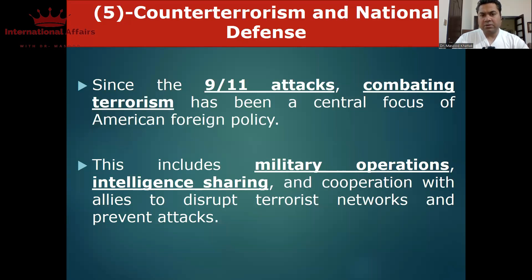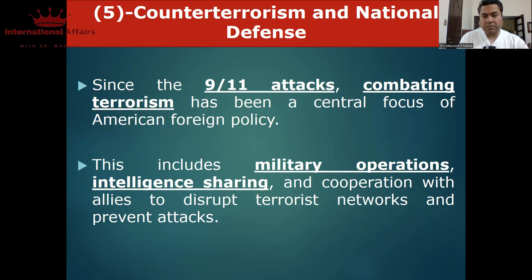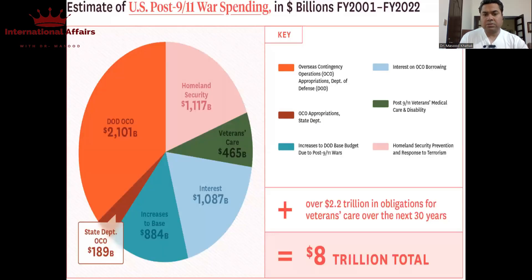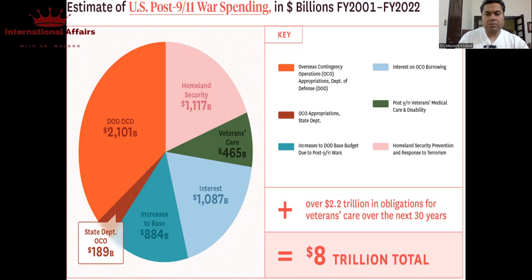پانچواں تenet counter-terrorism and national security defense ہے — یہ 9/11 کے بعد سب سے اہم foreign policy objective بنا۔ 9/11 کے بعد امریکہ کی foreign policy کا سب سے اہم objective counter-terrorism تھا — کس طریقے سے transnational terrorist groups کو روکا جائے تاکہ وہ United States of America پر attack نہ کریں۔ اس کے لیے امریکہ نے پوری دنیا میں operations کیے، خاص طور پر intelligence sharing کی — اور افغانستان-پاکستان region بہت زیادہ اہمیت کا حامل تھا۔ امریکہ تقریباً بیس سال وہاں رہا اور overall $8 trillion کے losses کروا کے وہاں سے نکلا۔